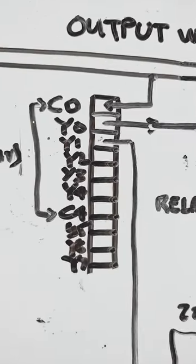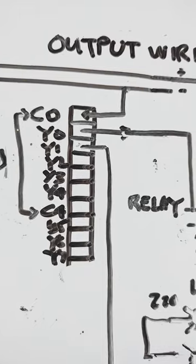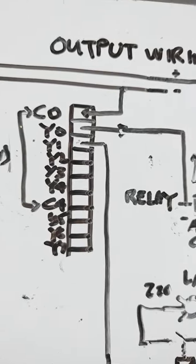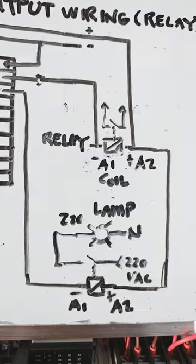Now as you can see, I have CO and C4, the common. We gave negative there, then Y0 and Y1, we are using them to activate the relay.